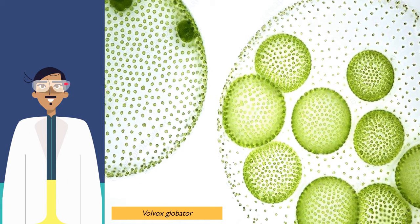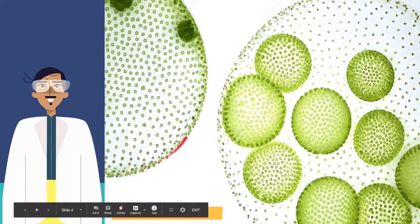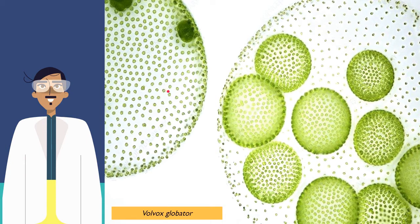If you still remember, I presented this species of algae during our first video on introduction to biology. This is my favorite algae, Volvox globator. I've mentioned that it's actually a colonial algae and this is how they exist. Each individual dot that you see here is actually one alga, one individual. But it cannot survive alone. It forms a colony with hundreds and thousands of other alga and they become this one sphere — that's one colony.